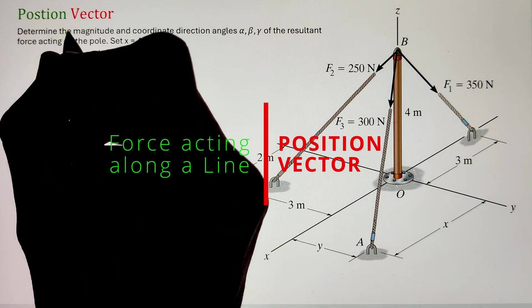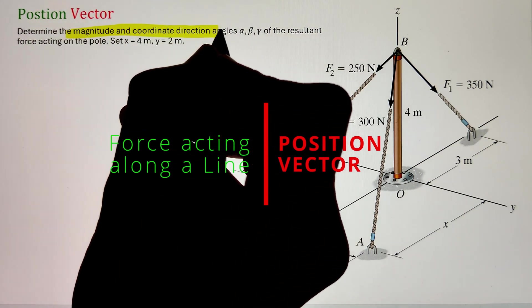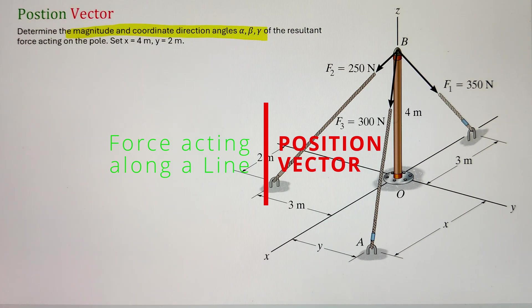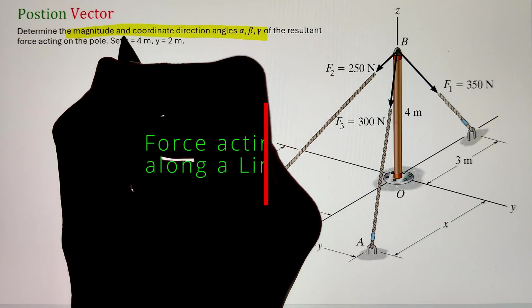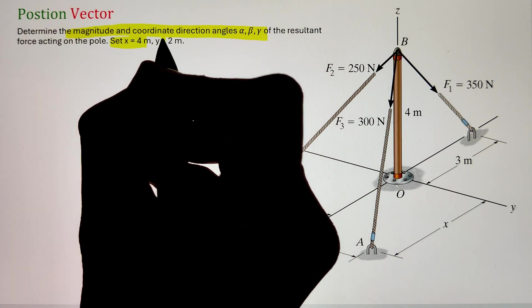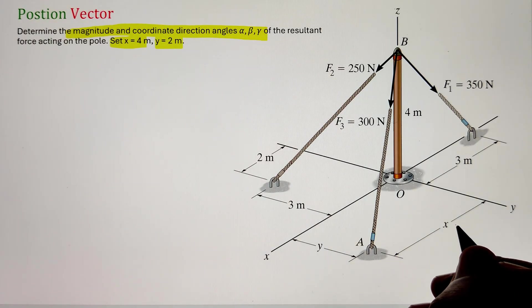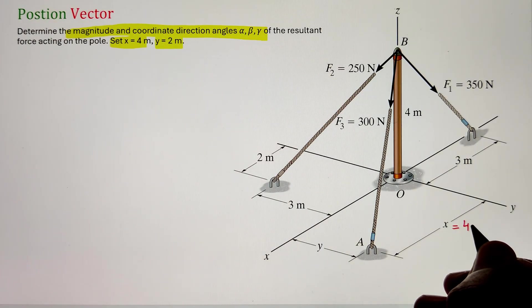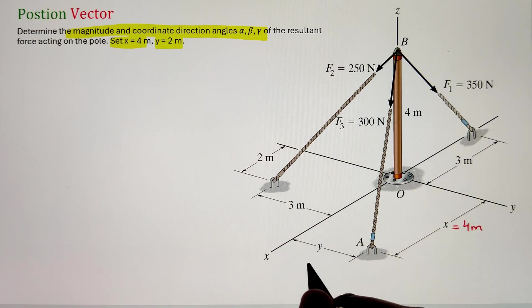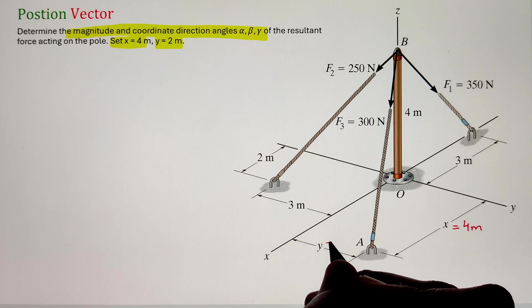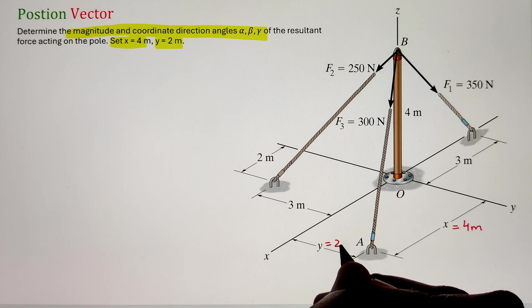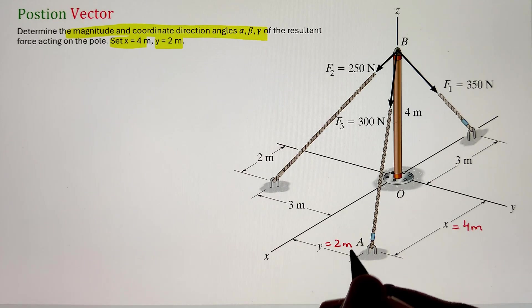In order to find the magnitude and coordinate direction angles alpha, beta, and gamma of the resultant force acting on the pole, we can start by first identifying the point coordinates of the two ends of the rope along which the forces are being applied.